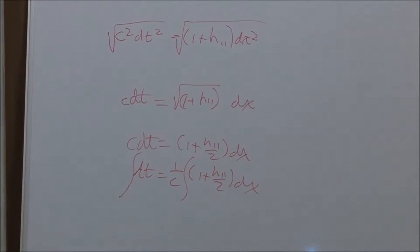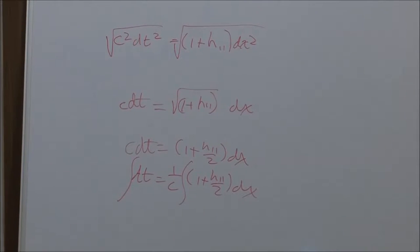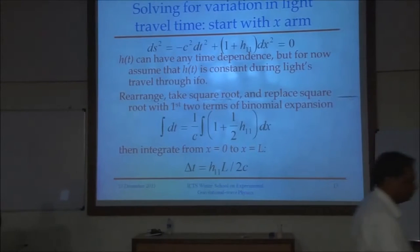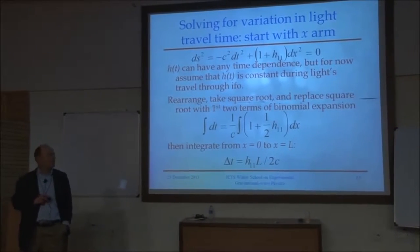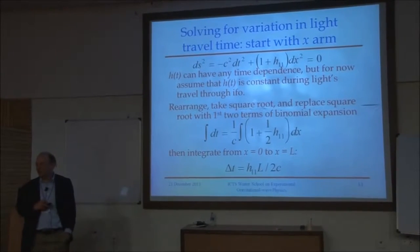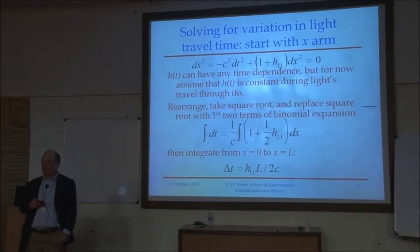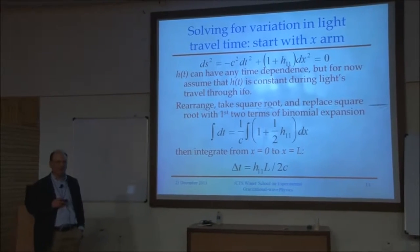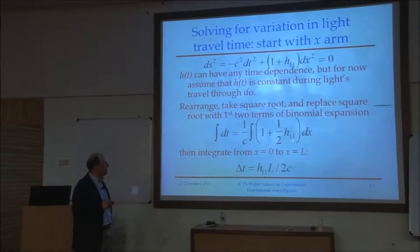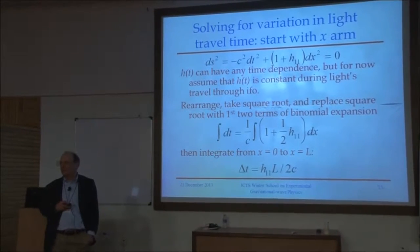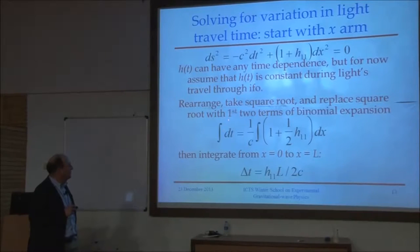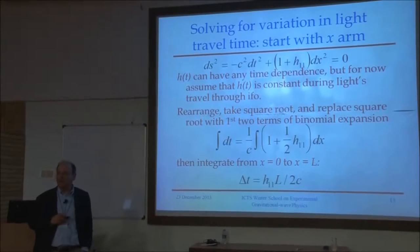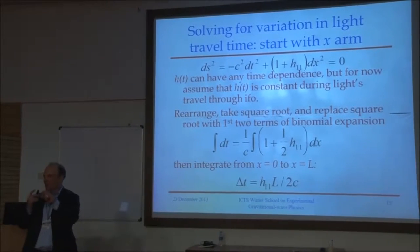Now I'm going to integrate. I promised this morning I'd mention where the factor of two comes from in the relationship between ΔL/L and h. It's here — having started with squares, taking a square root, then applying the binomial expansion. If ever there was a problem where the binomial expansion was good enough, it's where the small quantity is 10⁻²². This is the two that shows up in h = 2ΔL/L.